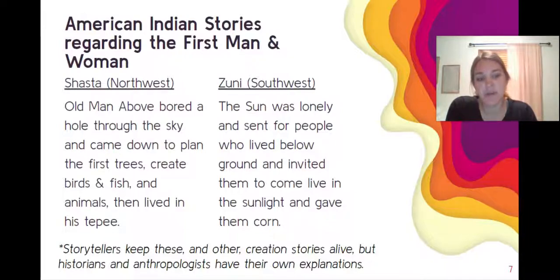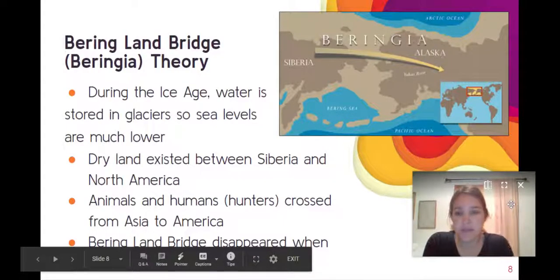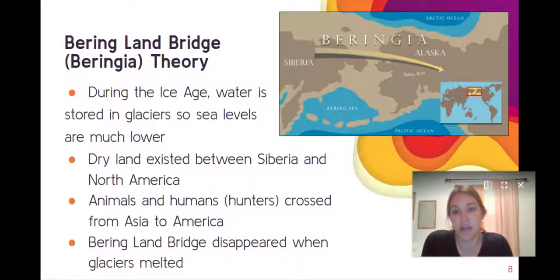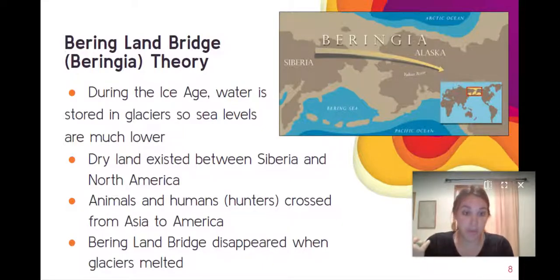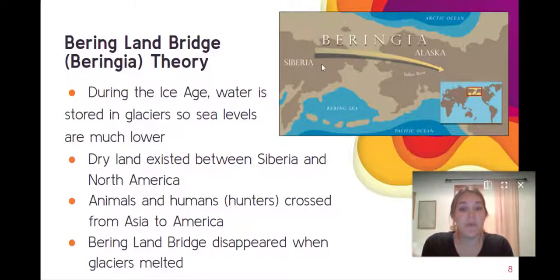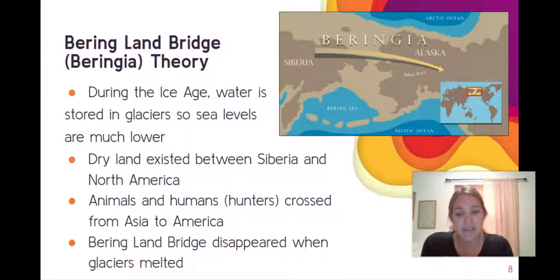Many different groups have their own stories kept alive through generations about who the first people were. Historians and anthropologists also have their own explanations. The one most likely found in your AP book is the Bering Land Bridge theory. During the most recent ice age, water from the oceans is more concentrated in glaciers, so sea levels are much lower. The theory is that there was a land bridge where the sea level was non-existent, and people were able to cross from Siberia over to Alaska. When the ice age ended and glaciers melted, the area filled with water and peoples would not have been able to return.